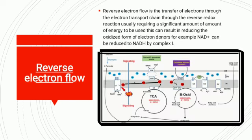Reverse electron flow is the transfer of electrons through the electron transfer chain through reverse redox reactions, usually requiring a significant amount of energy. This can result in reducing the oxidized form of an electron donor — for example, NAD+ can be reduced to NADH by Complex 1.